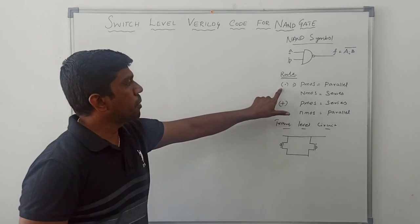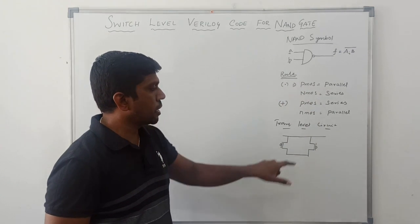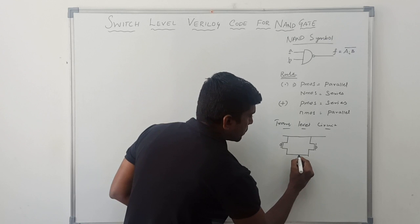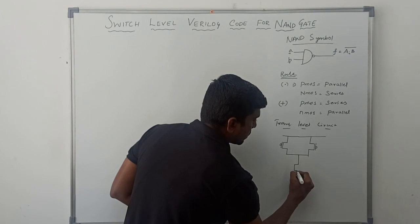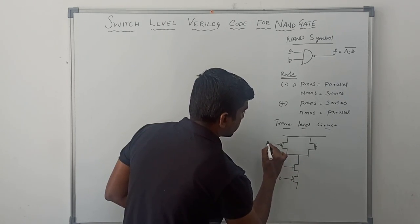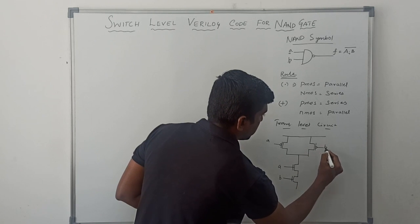Here, dot operator is present. These two PMOS transistors are connected parallel. And NMOS transistors connected series. Here, this A and B are the input variables.